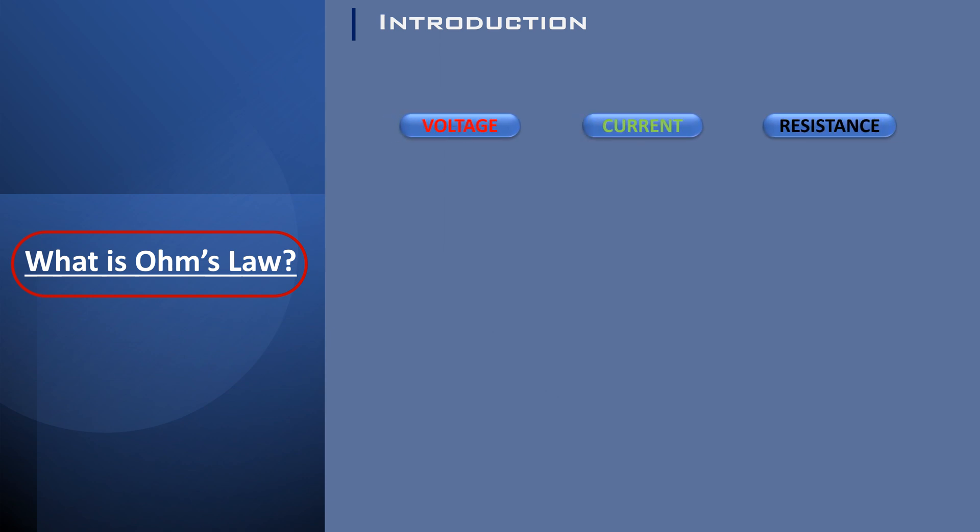Let's explore the relation between voltage, current, and resistance. Voltage provides the energy, current represents the flow of charge, and resistance opposes that flow. These three concepts are essential for understanding and manipulating electricity in circuits according to Ohm's Law.